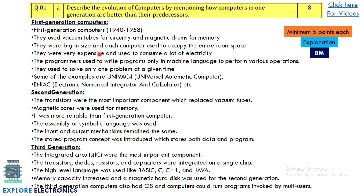The first question asks to describe the evolution of computers by mentioning how computers in one generation are better than their predecessors. While answering this, make sure you put at least five points for each generation of computers so that it gives clear differences between each generation. Make sure to highlight points specific to that generation — for example, in the first generation we have vacuum tubes for circuitry and magnetic drums for memory. Minimum five points to each generation would be enough.